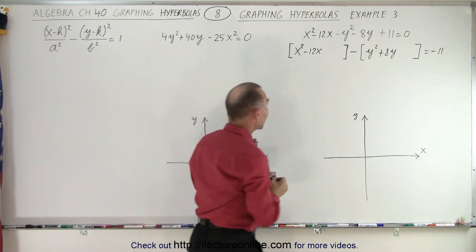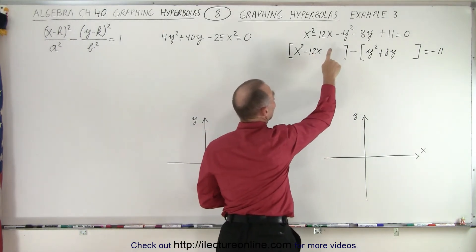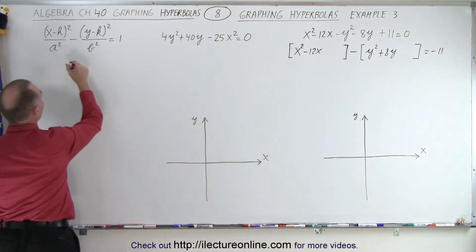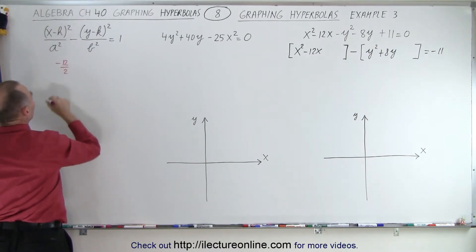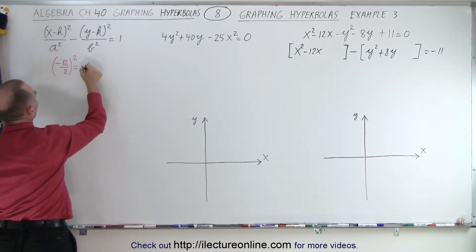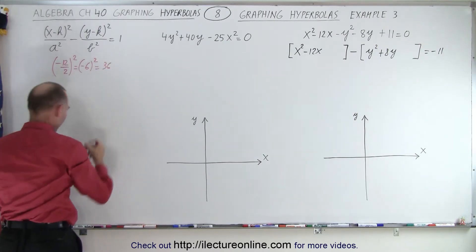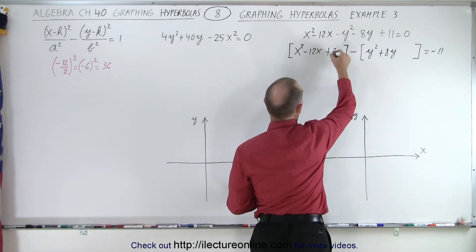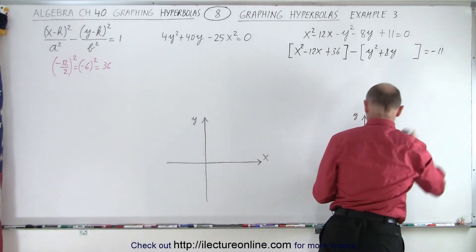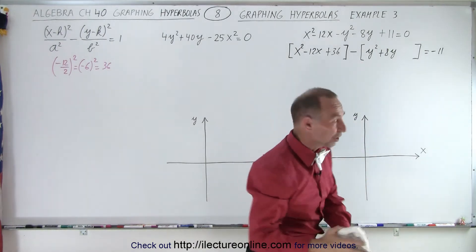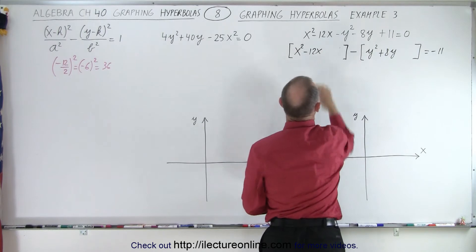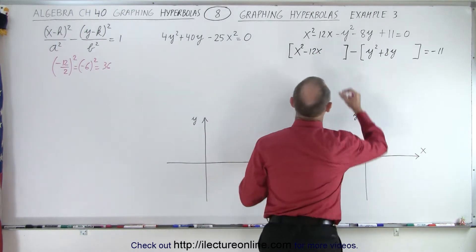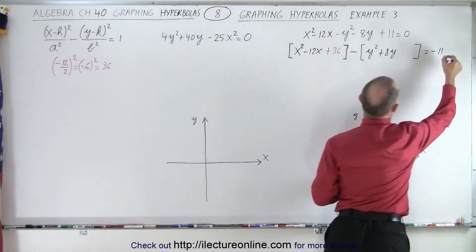Now what we need to do is make those perfect squares. So that means we're going to take the middle term, divide by 2, square it, and add it to both sides. So on the side here we have negative 12. We're going to divide that by 2 and square that, which is negative 6 squared, which is 36. Which means we need to add a 36 over here. And of course if we add 36 to the left side, we must add 36 to the right. So plus 36 and plus 36.